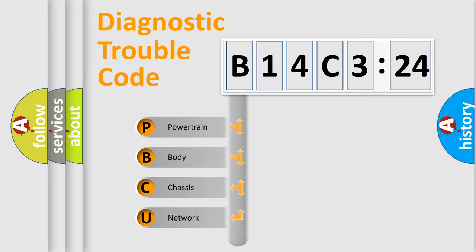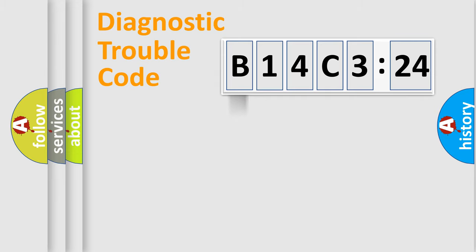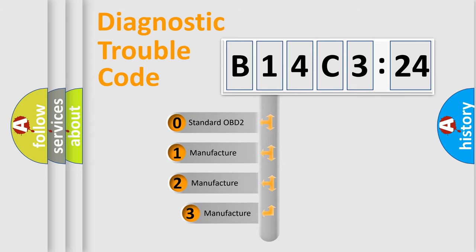We divide the electric system of automobile into four basic units: Powertrain, Body, Chassis, and Network. This distribution is defined in the first character code.